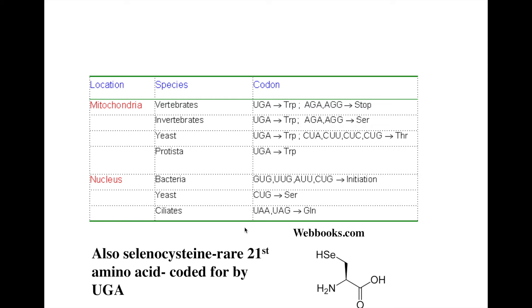There is also a rare 21st amino acid — we always talk about 20 amino acids, but there is a rare 21st amino acid called selenocysteine, and it is coded for by UGA.